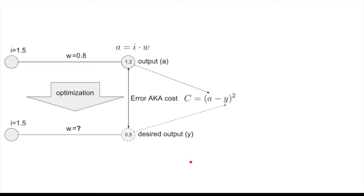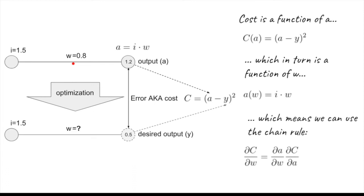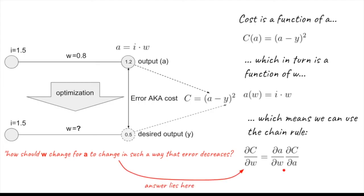So that's what we're going to do for our simple example. We are trying to minimize the error function with respect to W, so we need the rate of change of the cost function with respect to W. The cost function is a function of A, which in turn is a function of W — therefore we can use the chain rule. The rate of change of the cost function equals the rate of change with respect to A, multiplied by the rate of change of the activation with respect to W. That's the answer to how W should change for error to decrease.